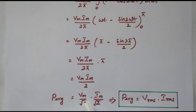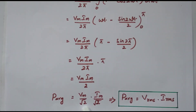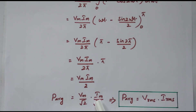Now Vm·Im/2 can be written as (Vm/√2) · (Im/√2), since √2 · √2 = 2. Here Vm/√2 is the RMS value of voltage (V_rms), and Im/√2 is the RMS value of current (I_rms). So the average power P_avg = V_rms · I_rms. In this video we analyzed: when AC current flows through a resistor, both current and voltage are in phase — confirmed by equations — and we derived expressions for instantaneous power and average power. Thank you.